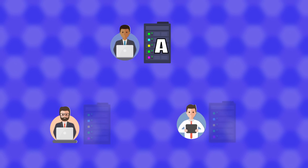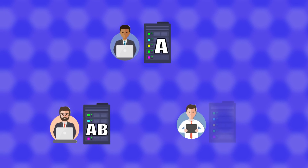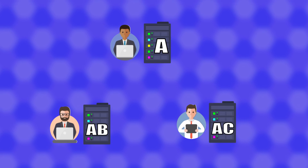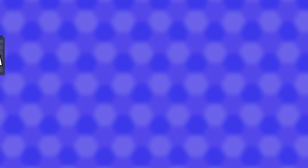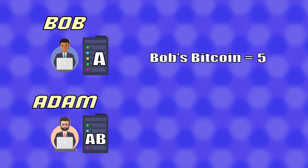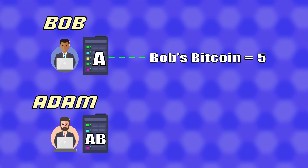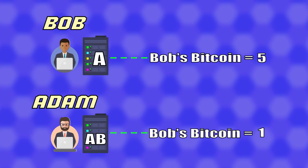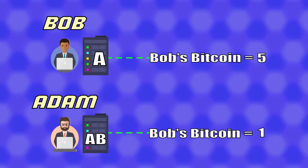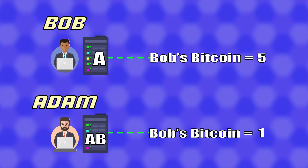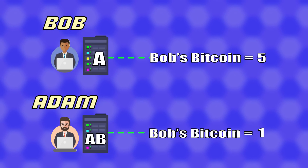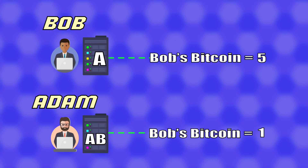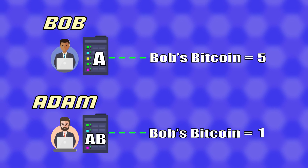When database A in a server is copied over and over again to different servers controlled by different people, that database is considered decentralized. However, we run into issues when two people take database A and make their own versions — database AB and database AC. If Bob updates the amount of Bitcoin he has to 5 Bitcoins, but Adam uses his copy to say Bob only has 1 Bitcoin, which database is correct? We need a way to make sure all database copies are in sync and to validate which copy is correct. That's where blockchain technology comes in.